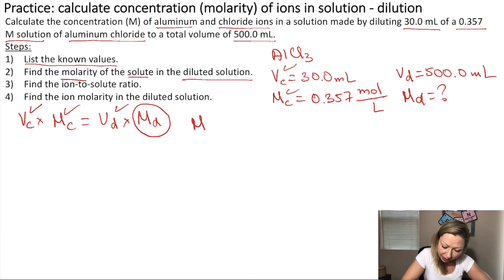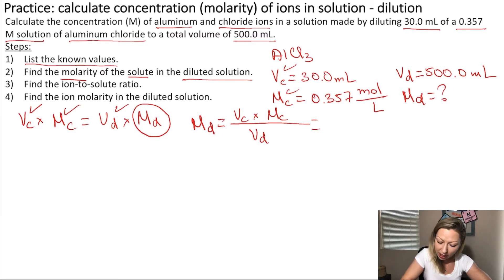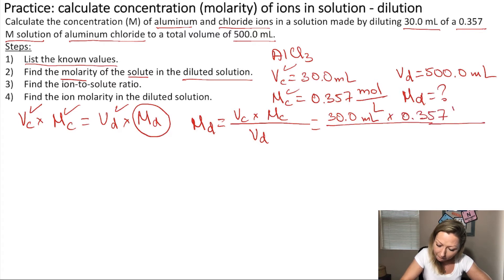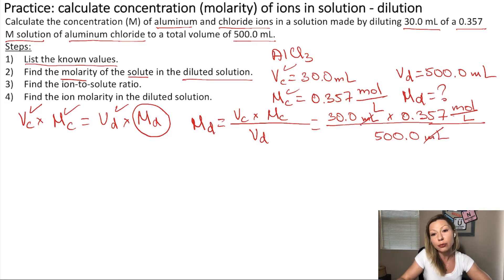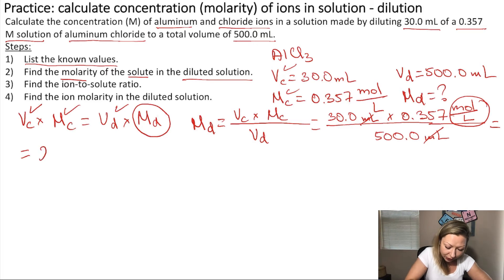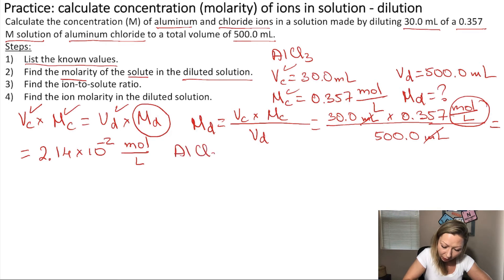M sub d equals the volume times the molarity of the concentrated solution divided by the volume of the diluted solution. Plugging in the values: 30.0 milliliters multiplied by 0.357 mol per liter divided by 500 milliliters. The milliliters cancel out and the final unit is mol per liter. This gives 2.14 times 10 to the negative 2 mol per liter for the concentration of the aluminum chloride solution.